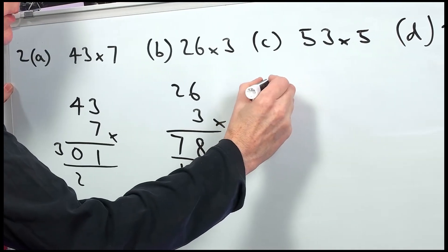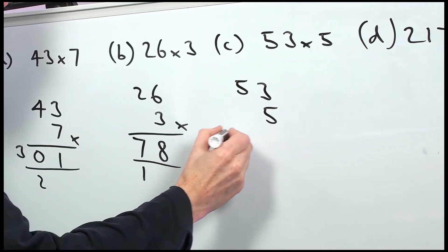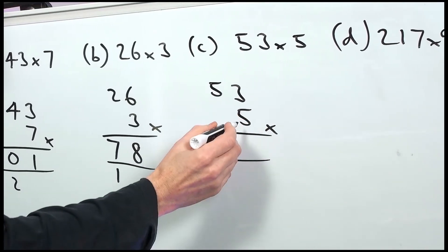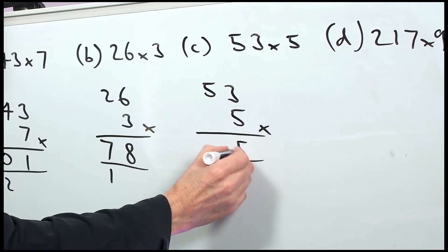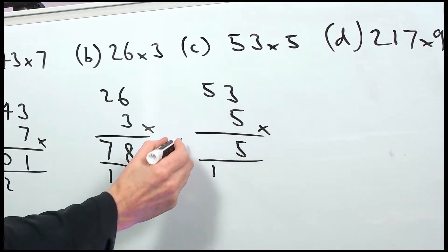Part C, so we have 53 times 5. 3 fives are 15. 5 fives are 25. 1 makes 26. 265.